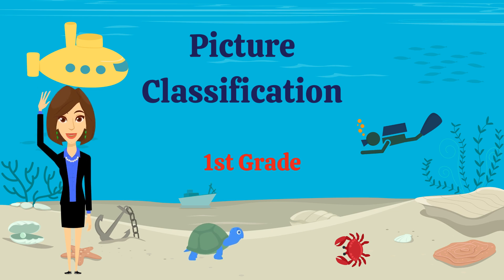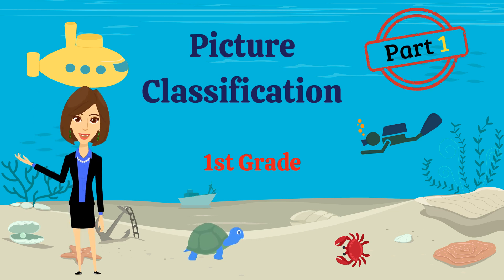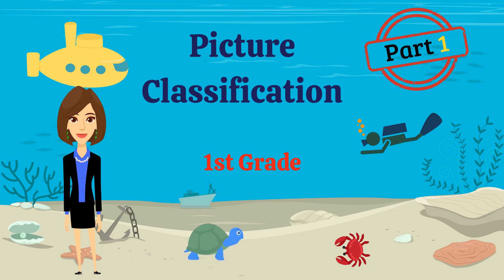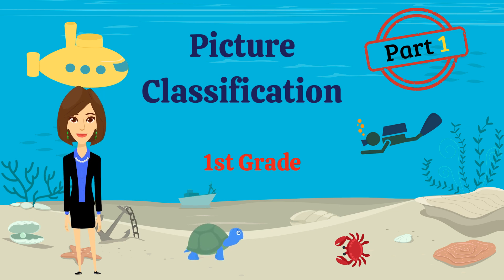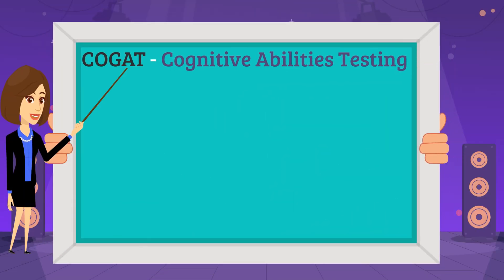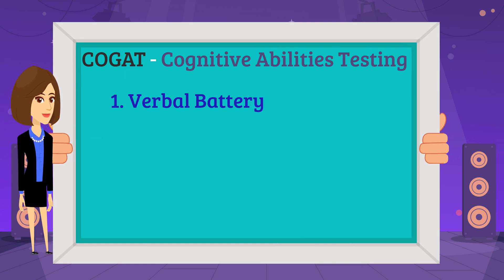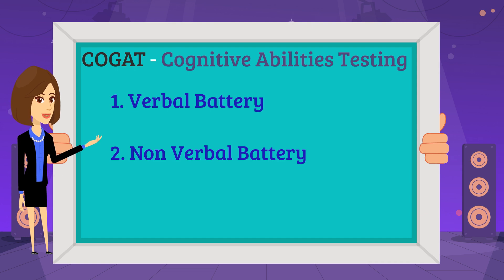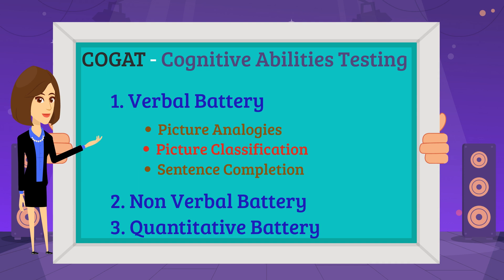Hello everyone, today we are going to learn about picture classification for first grade. COGAT — Cognitive Abilities Testing — has three categories: verbal battery, nonverbal battery, and quantitative battery.